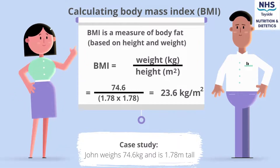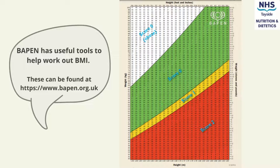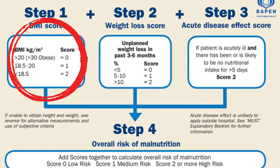The BMI calculation is weight in kilograms divided by height in meters squared. For example, John weighs 74.6 kilograms and is 1.78 meters tall, giving him a BMI of 23.6 kg/m². BAPEN has useful tools to help work out the BMI score, available on their website. A BMI greater than 20 scores 0, a BMI between 18.5 and 20 scores 1, and less than 18.5 scores 2.